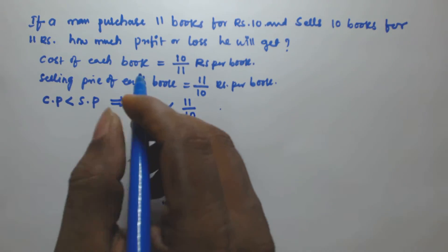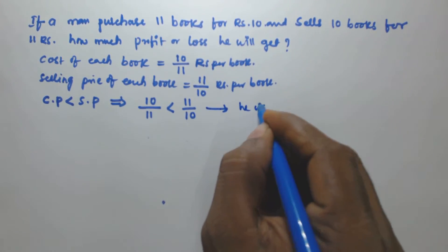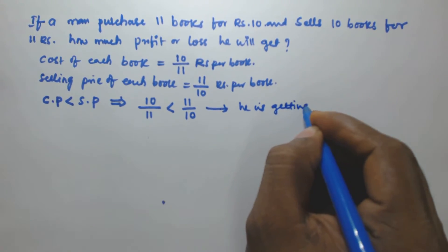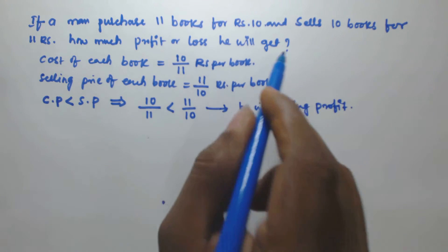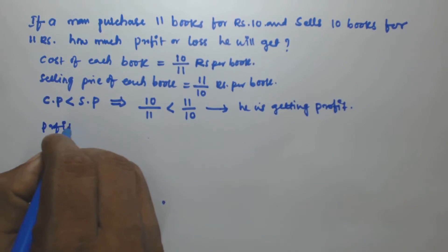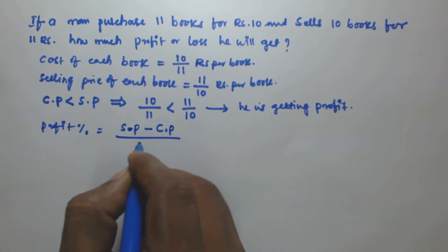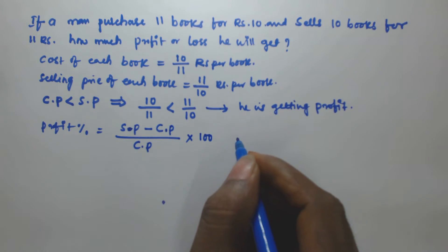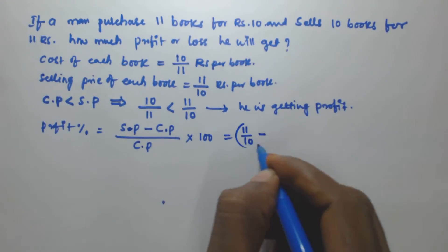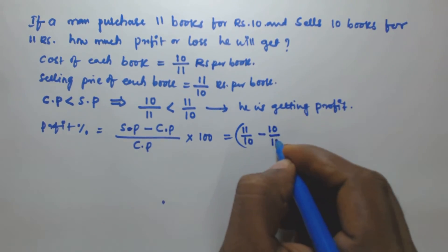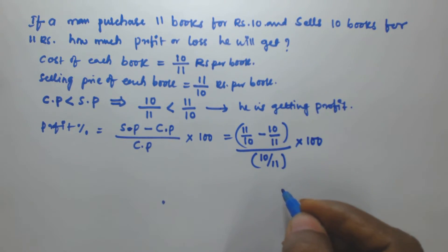Since the cost price is less than the selling price, that means there is a profit. The profit percentage formula is: selling price minus cost price, divided by cost price, into 100. So now substituting the values: selling price of each book is 11/10, minus cost price which is 10/11, divided by cost price 10/11, into 100.